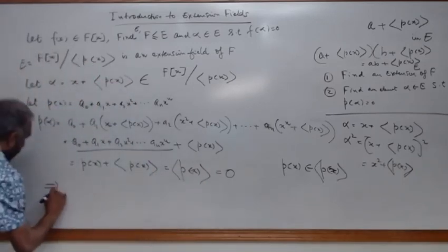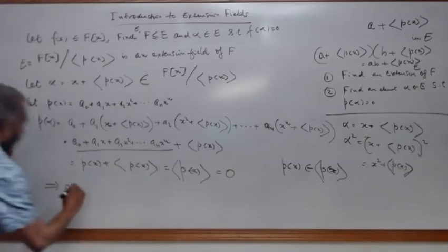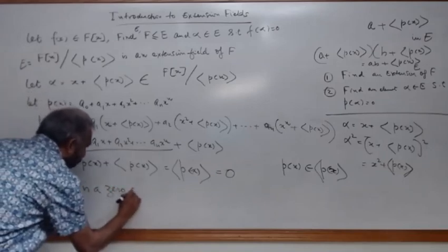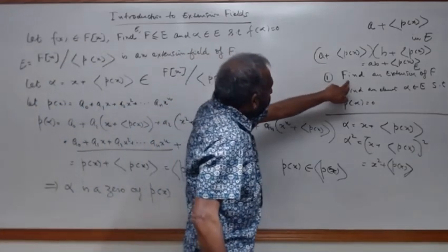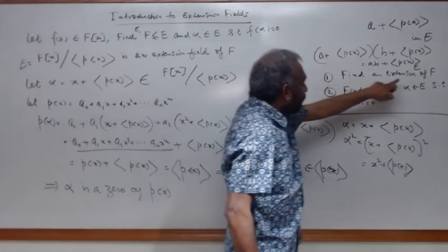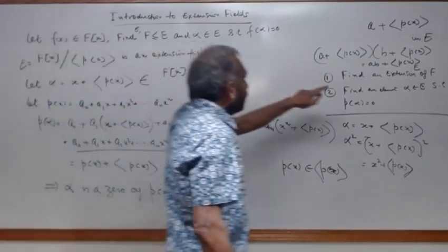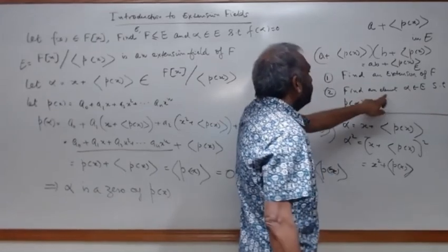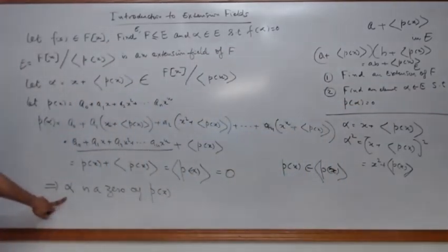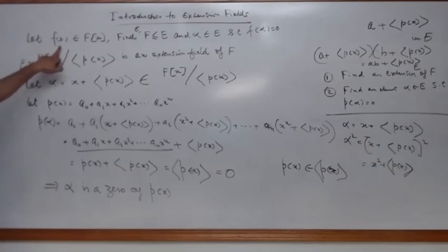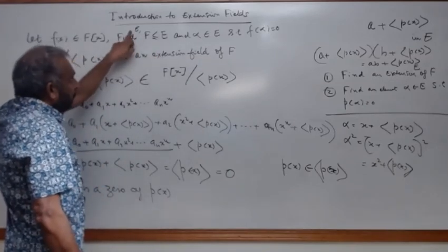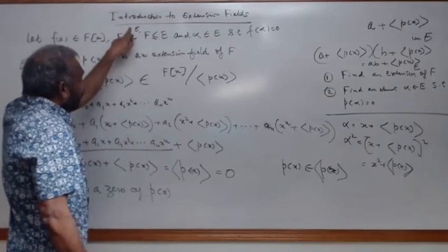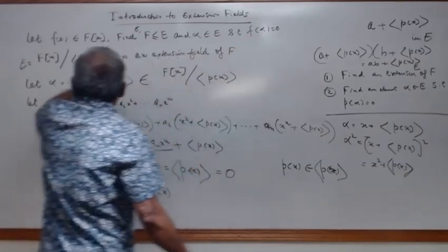Therefore p(alpha) equals 0, which means alpha is a zero of p(x). That is what we wanted to prove. We found an extension of F, namely F[x]/⟨p(x)⟩, and an element alpha in that extension that is a zero of the irreducible polynomial. So for any polynomial in F[x], we can find an extension of F and an element from that extension such that it is a zero of that polynomial.